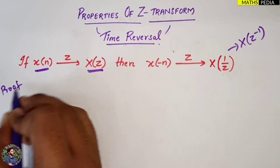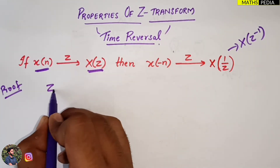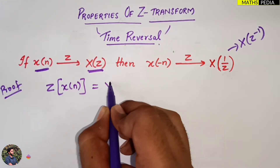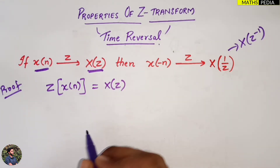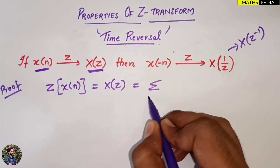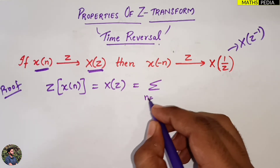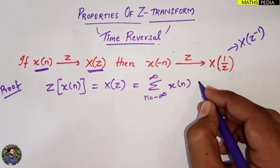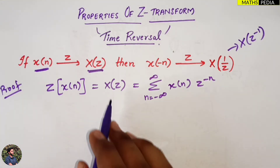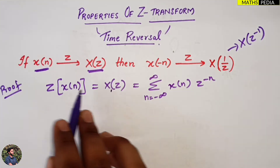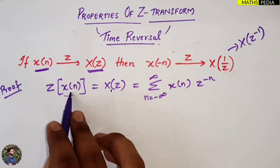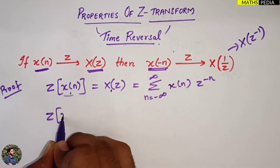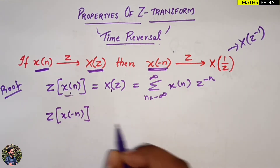Now we will go by the standard definition proof. The standard Z-transform of x(n) is X(z), which is given by the formula: summation from n = -∞ to ∞ of x(n) · z⁻ⁿ. This is the standard formula for X(z), which is the Z-transform of x(n). Now we have to find the Z-transform of x(-n).